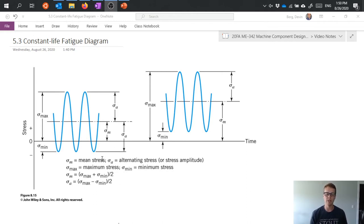It may or may not cross zero depending on the relationship between the mean and the alternating stress. In the plot on the right we can see that the mean stress is greater than the alternating stress such that the stress never crosses zero. It's always in this case positive or in tension.